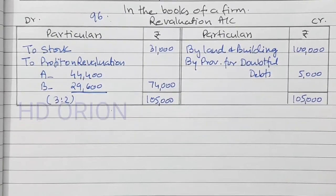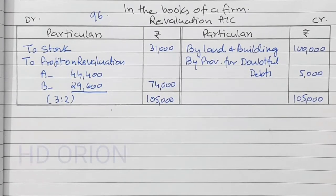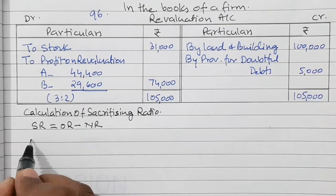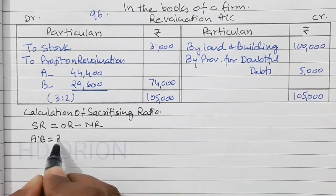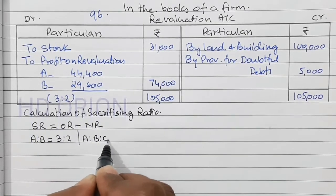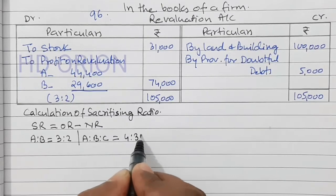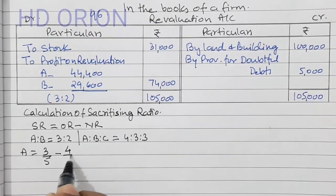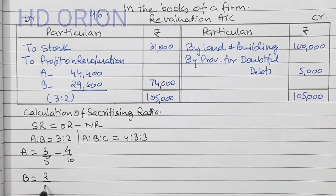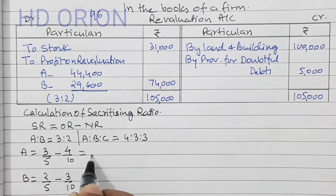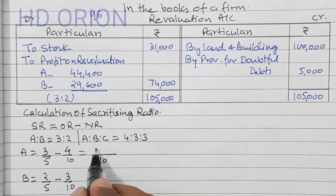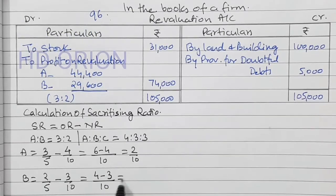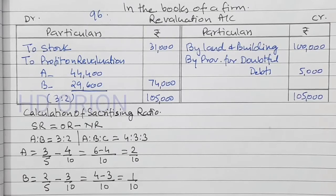Now we will make the capital account. But before that let us calculate sacrificing ratio and goodwill. Sacrificing ratio equals old ratio minus new ratio. Old ratio: A to B is 3 to 2. New ratio: A to B to C is 4 to 3 to 3. Sacrificing ratio for A equals 3/5 minus 4/10, and for B equals 2/5 minus 3/10. LCM is 10. For A: 6 minus 4 equals 2 by 10. For B: 4 minus 3 equals 1 by 10. So sacrificing ratio is 2 is to 1.